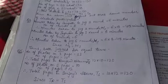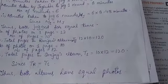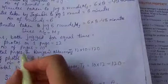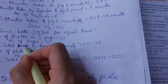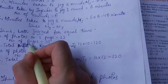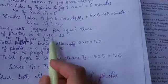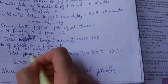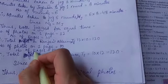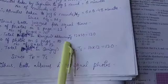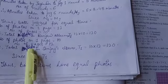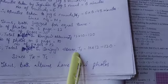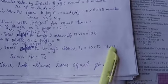So total number of pages... these are not pages, these are photos. So total photos in Ranjan's album will be TR for Ranjan. Number of photos on one page: 12. Number of pages: 10. So total photos in Sanjay's album will be TS for Sanjay. 10 into 12, that is 120.